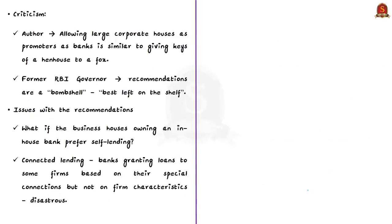Now let us see why one of its recommendations created a furor. The recommendation largely criticized was allowing large corporate houses or large industrial houses to be promoters of banks and apply for banking licenses. The author noted that allowing large corporate houses as promoters of banks is similar to giving the keys of a henhouse to a fox — if a fox is given the keys, it will kill and eat all the hens. Similarly, if large corporate houses become promoters of banks, they will utilize the money for their own benefit.